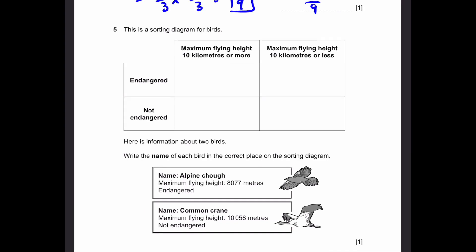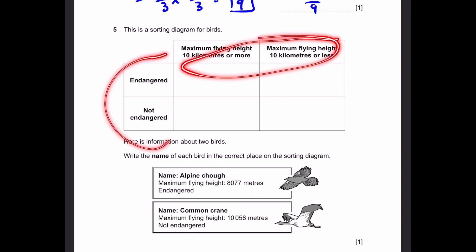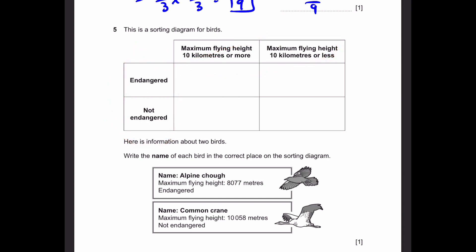Question 5. This is a sorting diagram for birds. Here's information about two birds — write the name of each bird in the correct place on the sorting diagram. The first one is the Alpine Choe. Its maximum flying height is 8077 meters, and it is endangered.